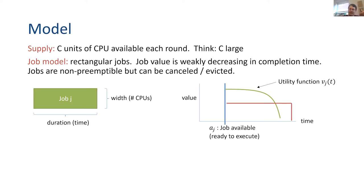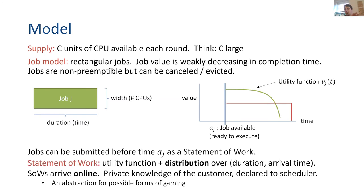The customer has some value as a function of how long it takes to run the job. This is more general than hard deadlines, which are very common in scheduling — a hard deadline would be a certain value that drops to zero at a certain point. We can allow soft deadlines as well, which is particularly important in this machine learning context. The probabilistic part is that jobs can be submitted to our platform in advance of the time when they're ready to execute. Someone can declare their job in advance and that declaration can be probabilistic — we call this a statement of work. They tell us a utility function and a distribution over the job's requirements and when it might be available. We model these as private knowledge of the customer.